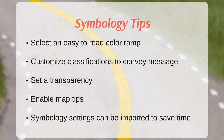In summary, here are a few things to remember when choosing symbology: Select an easy-to-read color ramp. Choose the number of classifications based on the message you would like to convey with the data. Set a transparency when using the grids with other datasets. Enable map tips to quickly see grid values. Symbology settings can be imported from one grid to another to save time.